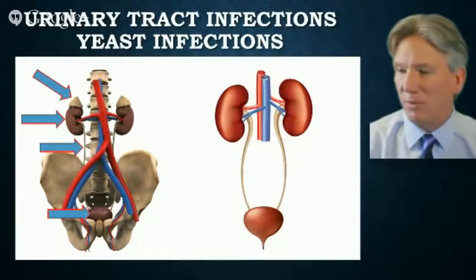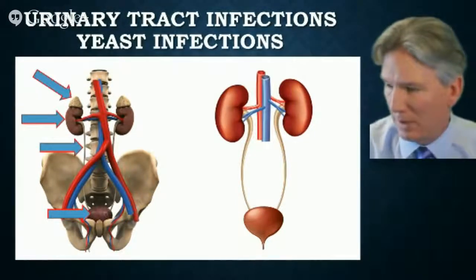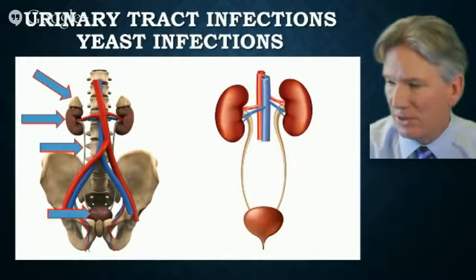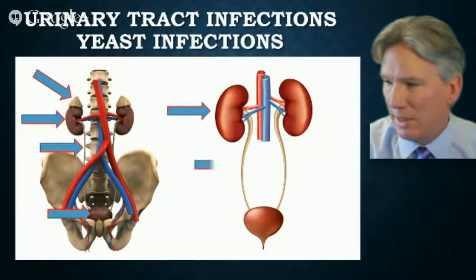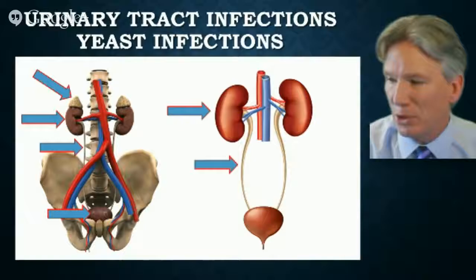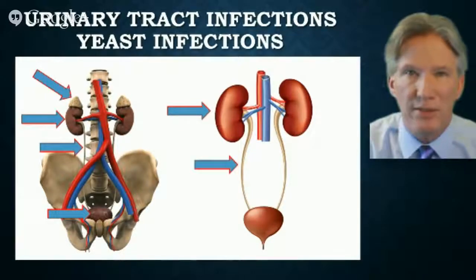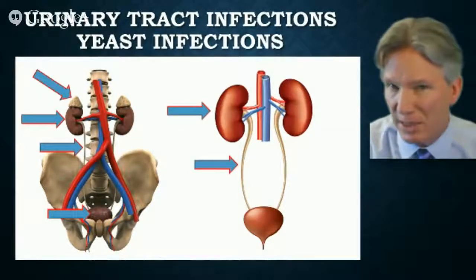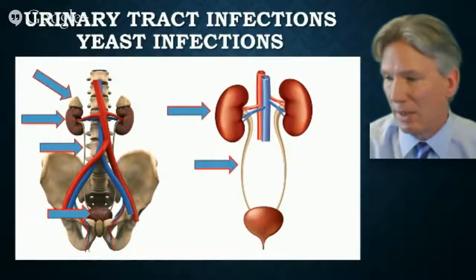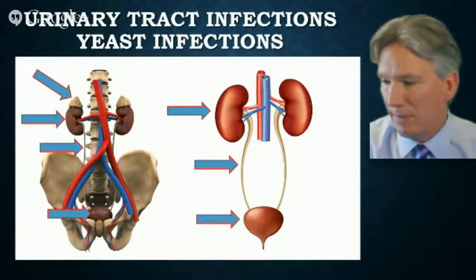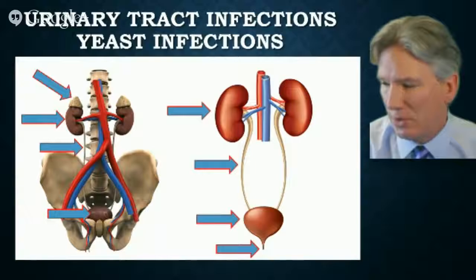Here is a blow-up of the kidneys and the bladder, just to kind of get us in the ballpark. Kidney there, ureter there — it's the tube that collects that. The urine passes from the kidney into the bladder through the ureter. And there, of course, is the bladder. Here is the urethra where the urine escapes the body.